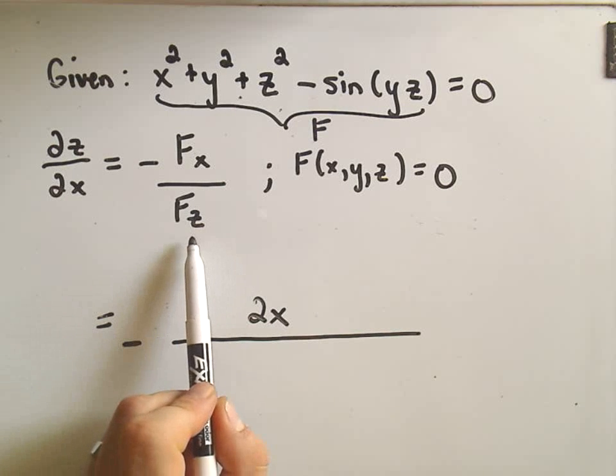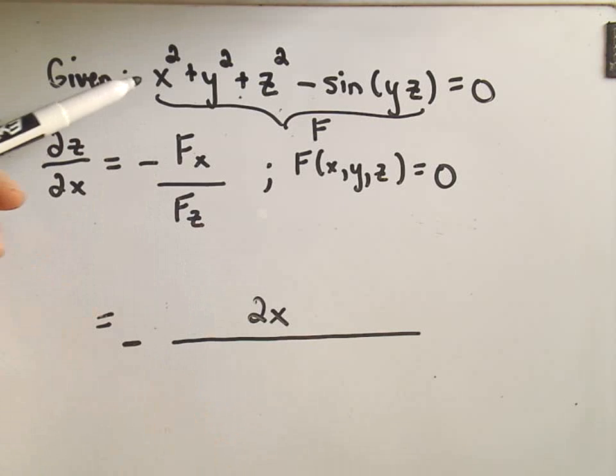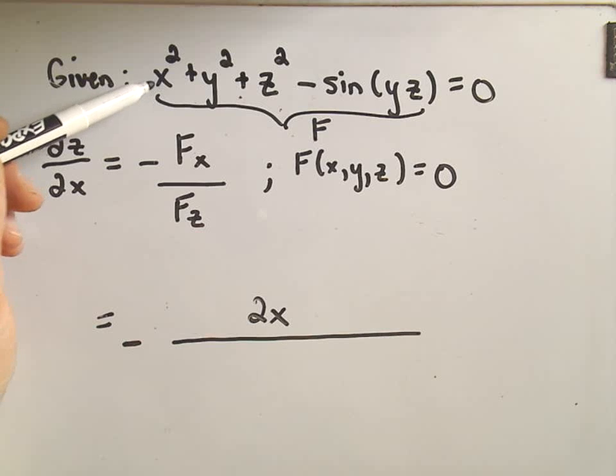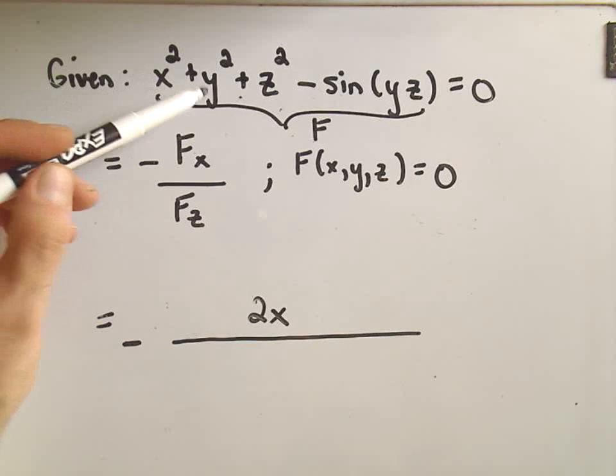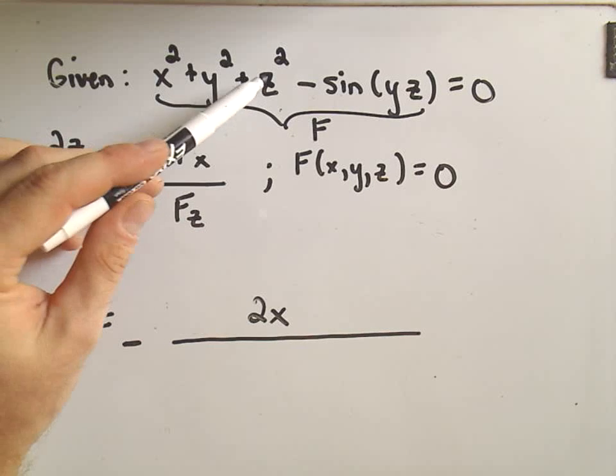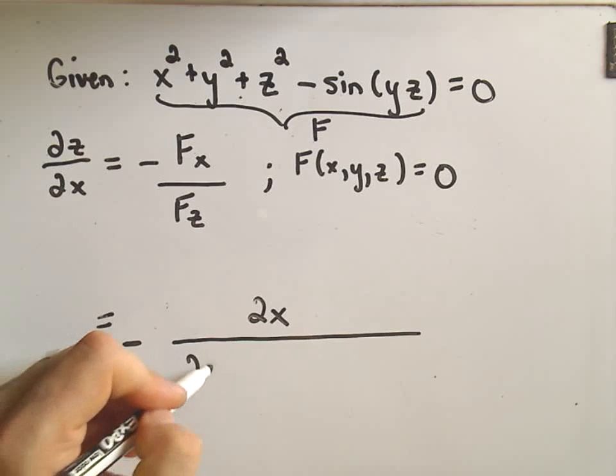In the denominator we have to take the partial derivative of our function with respect to z. Okay, so that means x is a constant, so x squared is also a constant, so the derivative of the x squared part will be zero. The derivative of the y squared part will be zero. Okay, the derivative of z squared will be 2z.